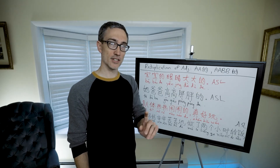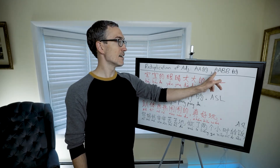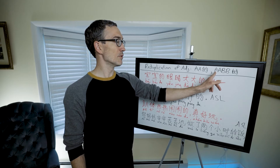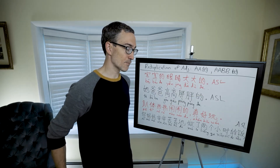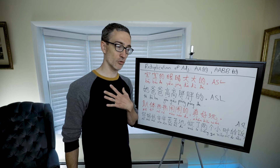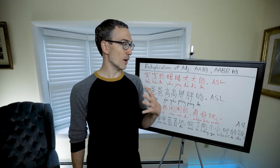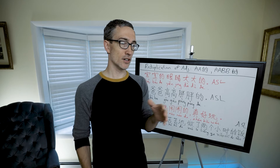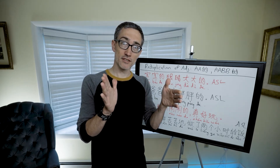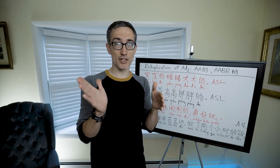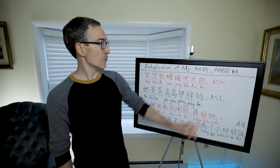If it's a two-syllable adjective, the pattern is AABB. For example, the adjective 'rèqíng' meaning warm, friendly, or hospitable — the reduplicated form would be 'rè rè qíng qíng de.' That makes sense rather than 'rèqíng rèqíng' — it's 'rè rè qíng qíng' with a 'de' after it.